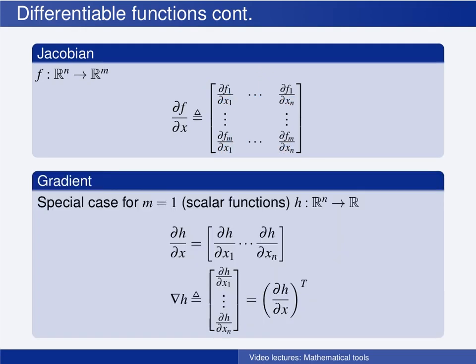And then we have the special case where m is 1, in other words, where the function maps an n-dimensional vector to a scalar. Let's call the function h. h is then a scalar function that maps the vector x, which has n elements, x1 up to xn.